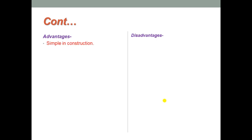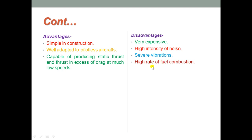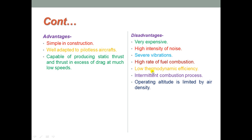Advantages of the pulse jet include: simple construction, well-adapted for pilotless aircraft, capable of producing static thrust, and thrust exceeds drag at low speeds. Disadvantages include: expensive construction, high intensity noise, severe vibration, high rate of fuel consumption, low thermodynamic efficiency, intermittent combustion, operating altitude limited by air density, and serious limitations due to the mechanical non-return valve elements.